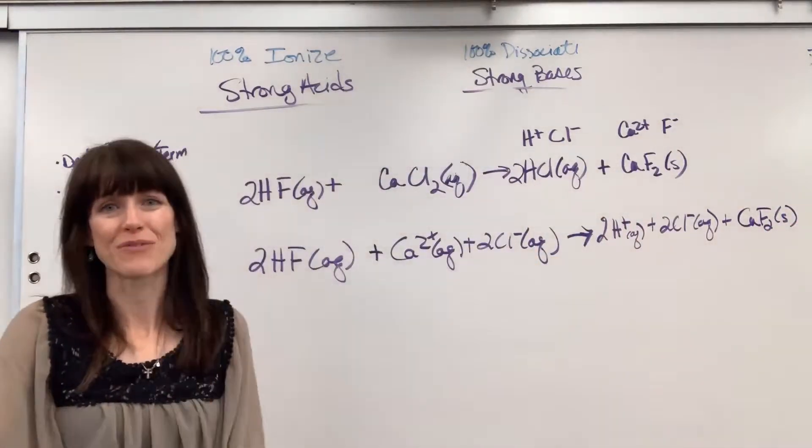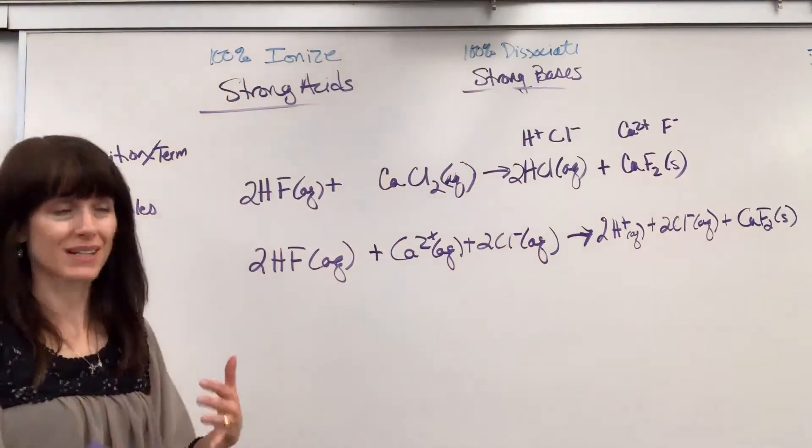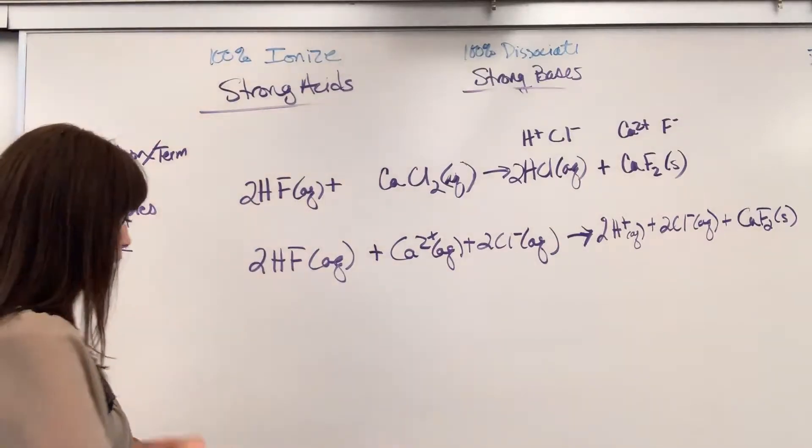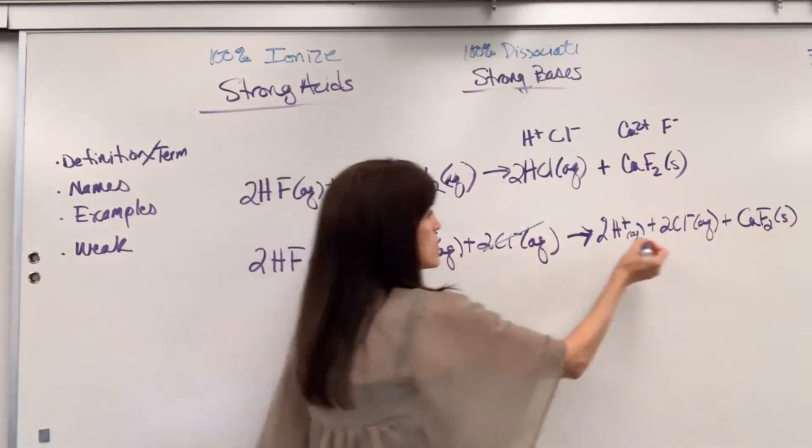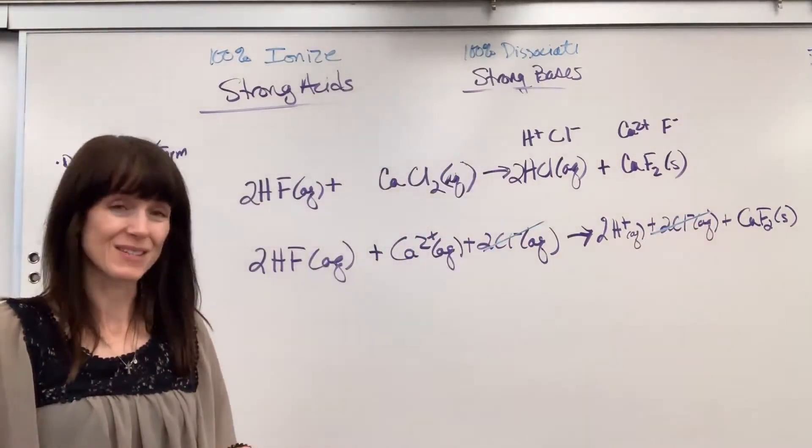Now, we're going to find spectator ions, anything that's the same on both the reactant and product side. So I take a look, and the only ion that I can see that's a spectator ion is the two chlorides. Those two chloride ions are going to be the spectator ions.